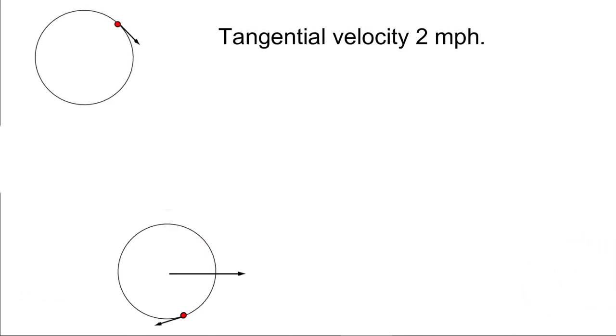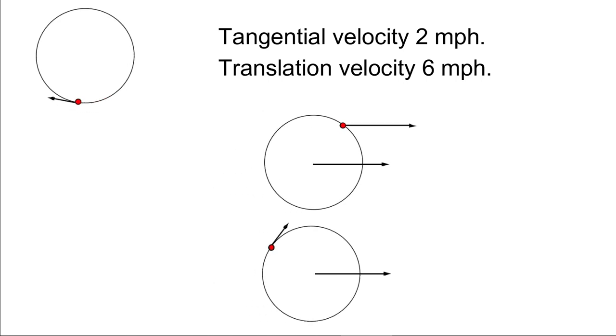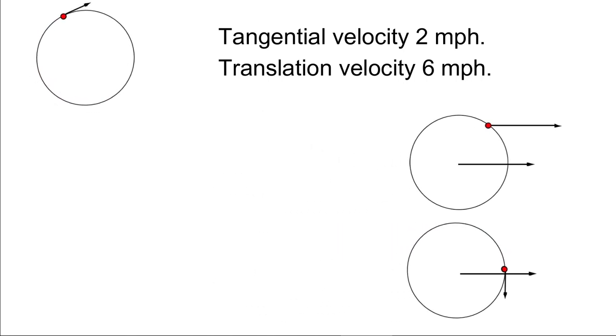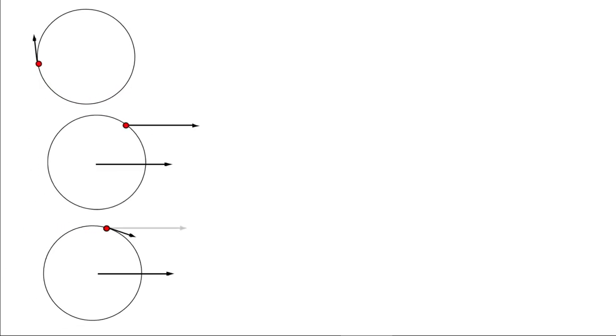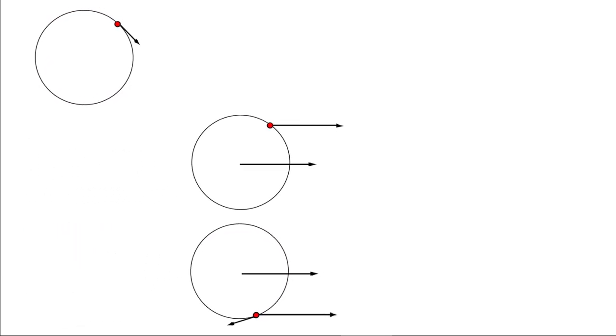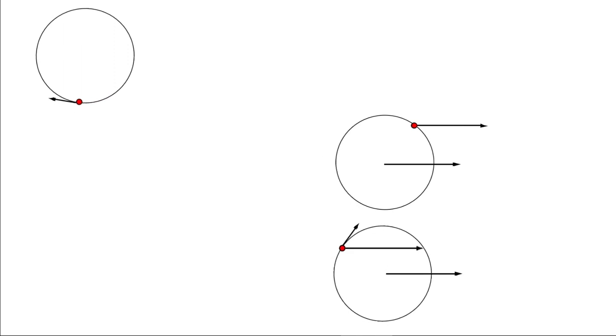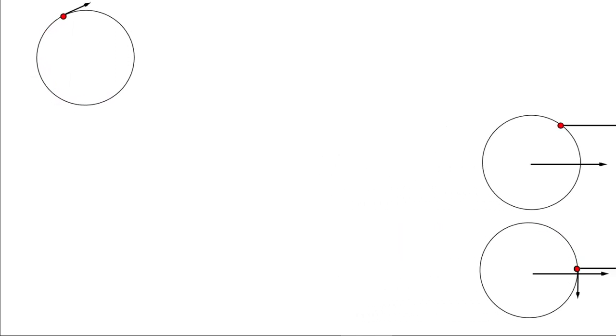There are two velocities to consider for the mass: tangential velocity and translation velocity. As we have done before, both velocities are represented by a vector arrow. You can see the relationship between the arrows, the angle changes.